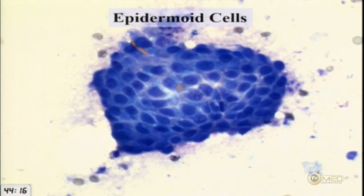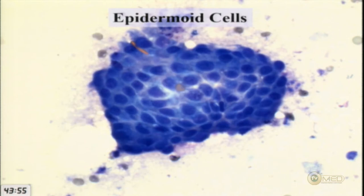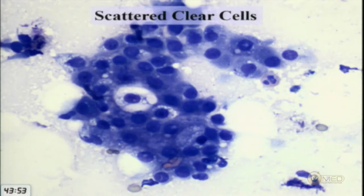Other groups of cells have an epidermoid look — they appear squamoid with well-defined cell borders, very cohesive, forming an almost flat sheet. This is a little concerning, and I use the term epidermoid because we started to wonder: could this be mucoepidermoid carcinoma?